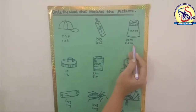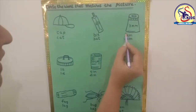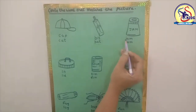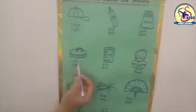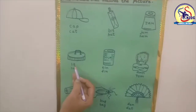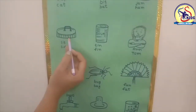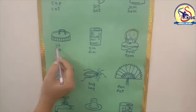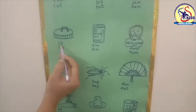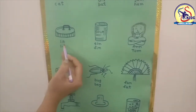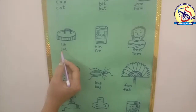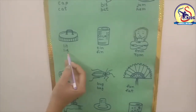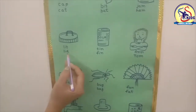Our next picture — J-A-M, jam, or H-A-M, ham. The correct word is J-A-M, jam. Circle this word. Our next picture is a lid. Our first word is L-I-T, lit, and another word is L-I-D, lid.